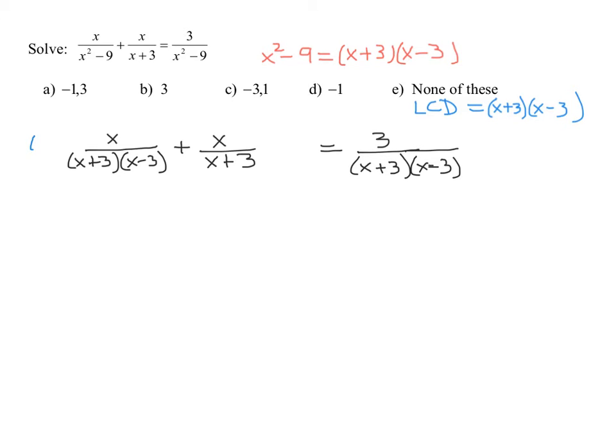So I'm going to multiply this by x plus 3 x minus 3 over 1. I really don't have enough room but hopefully you see what I'm doing. Here I'm going to multiply by x plus 3 x minus 3 over 1. And finally I'm going to multiply by x plus 3 x minus 3 over 1.